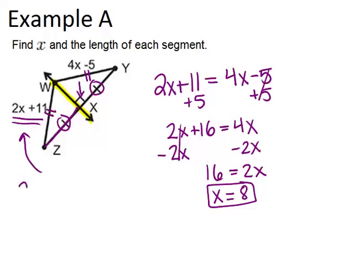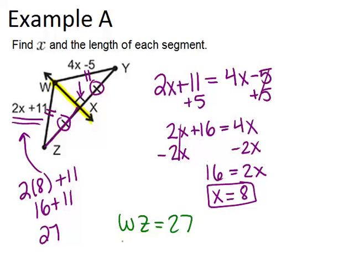Because x is 8, that means 2x plus 11 is actually 2 times 8 plus 11, which is 16 plus 11, or 27. So WZ is 27, and similarly WY is 27, because they have to be congruent.